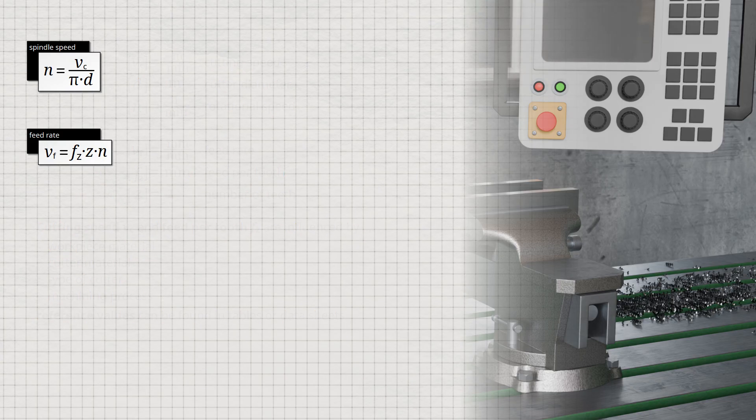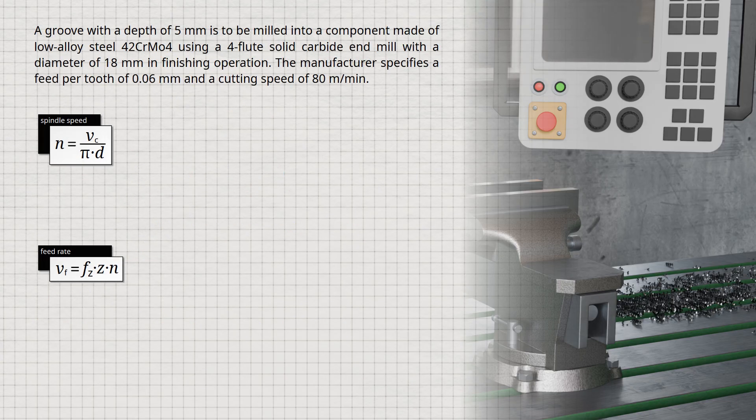Let us consider a small example. A groove with a depth of 5 mm is to be milled into a component made of low-alloy steel, 42CrMo4, using a 4-flute solid carbide end mill with a diameter of 18 mm, employing a finishing process. The feed per tooth is specified by the manufacturer as 0.06 mm, and the cutting speed as 80 m per minute.